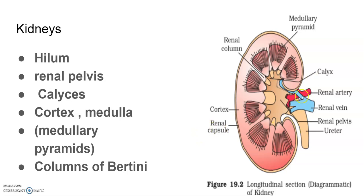Towards the center of the inner concave surface of the kidney is a notch called the hilum. The hilum is the structure through which the ureter, blood vessels, and nerves enter — you can see here various nerves and arteries entering through this part.